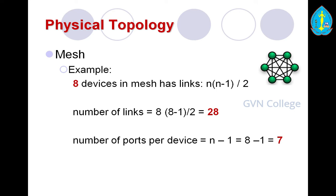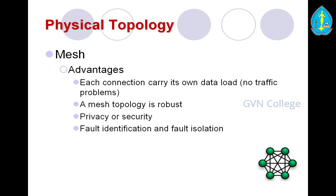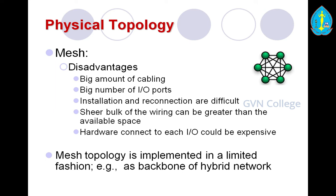Mesh topology advantages: each connection carries its own data load with no traffic problems; mesh topology is robust; privacy and security is a main advantage; and fault identification and isolation is easy. Mesh topology disadvantages: a large amount of cabling required, a large number of I/O ports, installation and reconfiguration are difficult, the sheer bulk of wiring can exceed available space, and hardware connected to each I/O port is expensive. Mesh topology is implemented in a limited fashion in networking applications, for example as a backbone of a hybrid network.